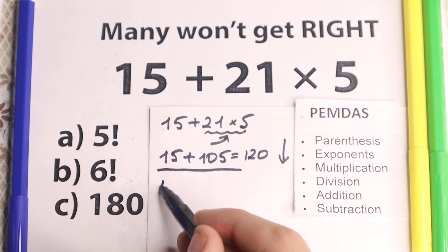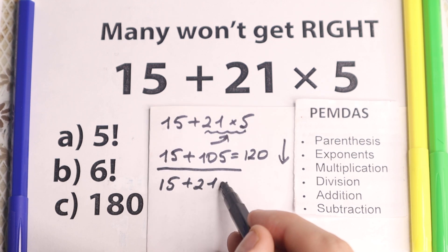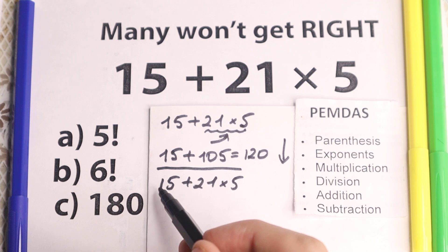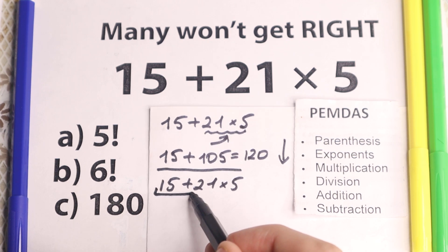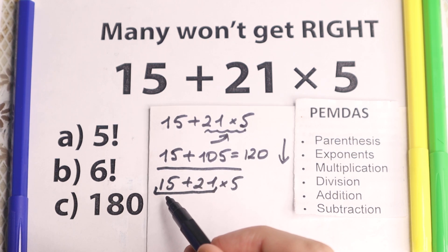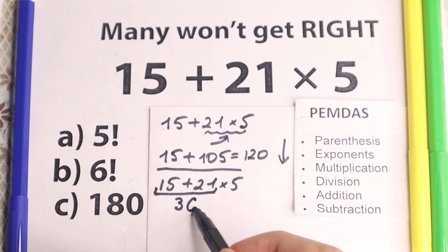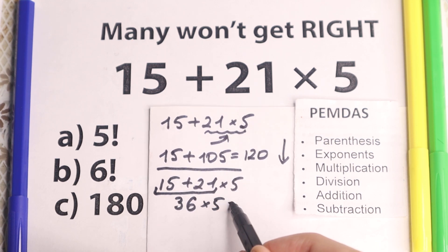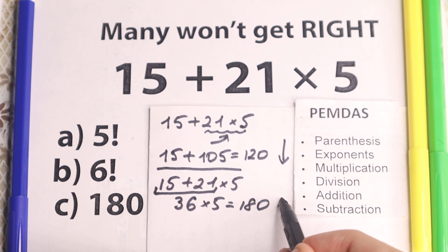And then they do this, maybe the main common mistake, because they go with these solutions of 15 plus 21 times 5. They go with addition first, 15 plus 21, this is our 36, 36, and then times 5, they say okay, which is really great, 180, we have this option, this is option C.